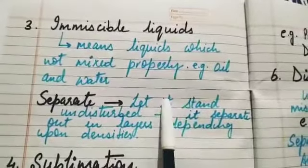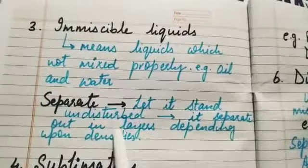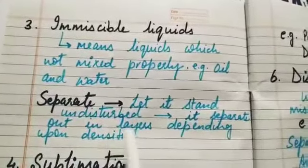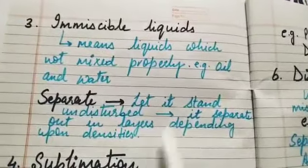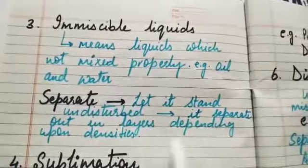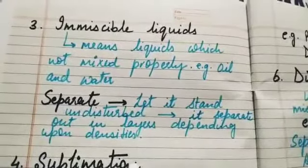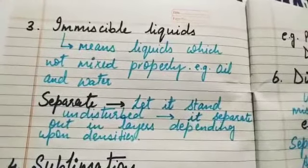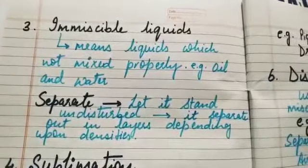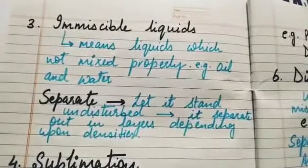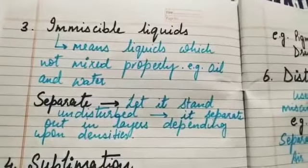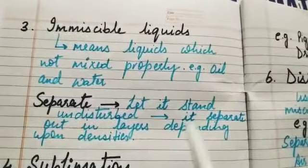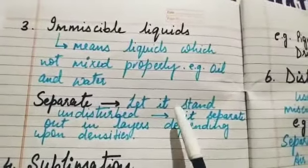To separate immiscible liquids, we let the mixture stand undisturbed. Different layers are formed depending on their densities, and by this method two immiscible liquids can be separated.